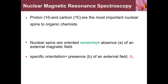NMR means nuclear magnetic resonance spectroscopy. H1 NMR and C13 NMR refer to proton nuclear magnetism and carbon magnetism respectively. That magnetism is observed due to spinning in the nucleus.